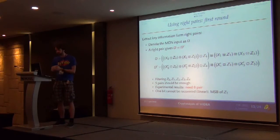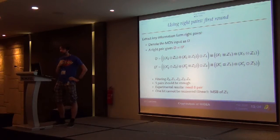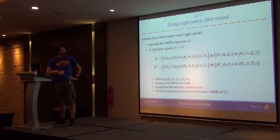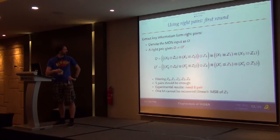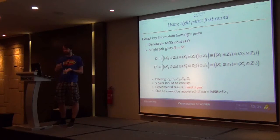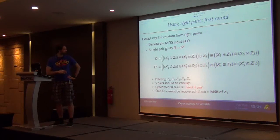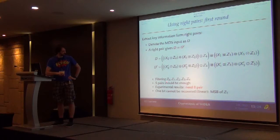Another issue noticed when implementing is that there is one bit of the key that we cannot recover. The most significant bit of z1 has a completely linear effect on d, so it has the same effect on d and d prime. When you want d to equal d prime, this bit doesn't affect the equation, so you're not going to recover it. But that's just one bit, so it's not a very big issue. The main idea is that we have filtering on those five subkeys and we recover them from right pairs.